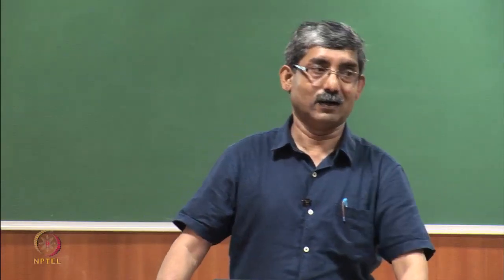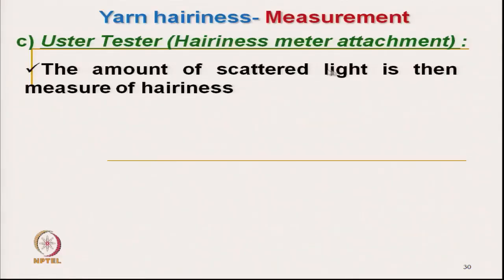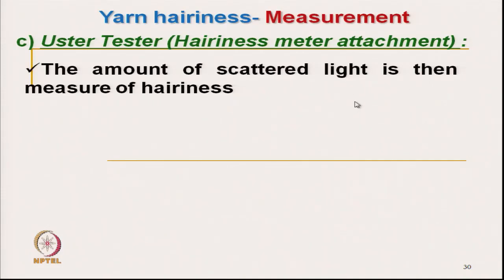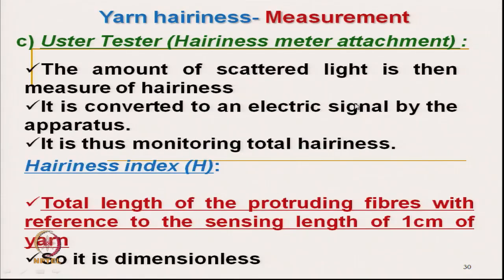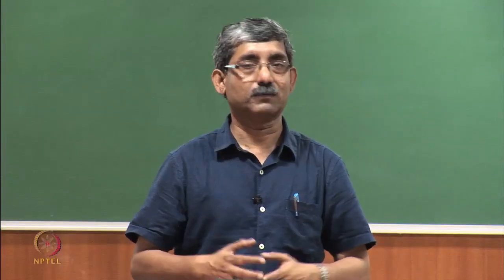This is the indirect method of measuring hairiness — we can get an idea about the prickle sensation. The amount of scattered light is measured as a hairiness index: total length of hair per unit length of yarn. It is dimensionless, so we get one index for comparing values, expressed as a spectrogram or similar output.